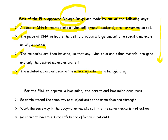The biologic drug may be prepared using this method according to FDA. Now, some important points for biosimilar approval: according to the FDA, to approve a biosimilar, the reference biologic and the biosimilar drug must be administered the same way, at the same dose and strength. They must work the same way in the body — pharmacists call this the same mechanism of action. They must also be shown to have the same safety and efficacy in patients — meaning both the parent drug and the biosimilar.